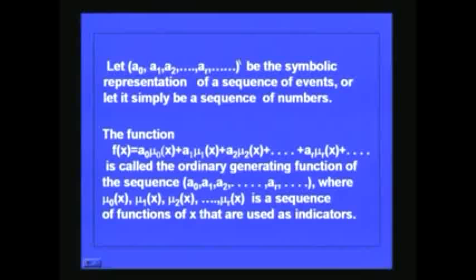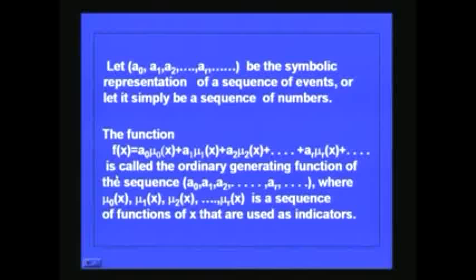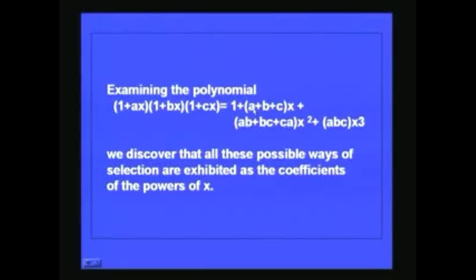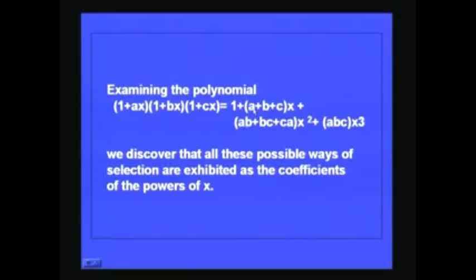The sequence A₀, A₁, A₂, ..., Aᵣ is what you want to represent, and you use the indicator functions μ₀(x), μ₁(x), μ₂(x), etc. If you look back at our example, the sequence is 1, (A+B+C), (AB+BC+CA), ABC, and if you use 1, x, x², x³, etc. as indicator functions, this is the ordinary generating function.